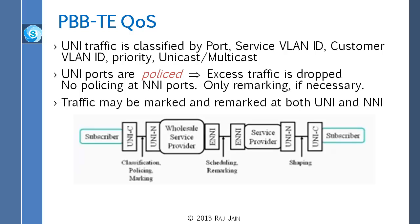UNI traffic is classified by the port, service VLAN ID, customer VLAN ID, priority, unicast, multicast — all of these things are looked at and then put into the packet. UNI ports are policed using those two leaky buckets. Excess traffic is dropped. There is no policing at the NNI port — you cannot do policing from carrier to the next carrier, but you do the policing at the beginning.